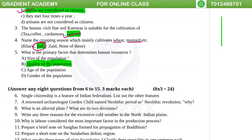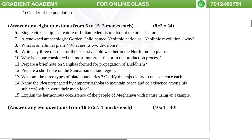What is the primary factor that determines human resources? The primary factor that determines human resources is the quality of the population.